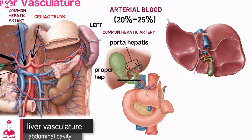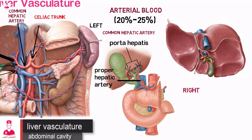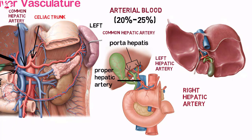The proper hepatic artery divides into right and left hepatic arteries, which continue to branch and supply the lobes of the liver. The right hepatic artery is larger than the left and supplies the majority of the right lobe of the liver. It passes posterior to the uncinate process of the pancreas and runs along the posterior wall of the common bile duct into the right hepatic lobe.